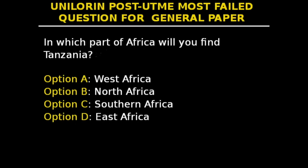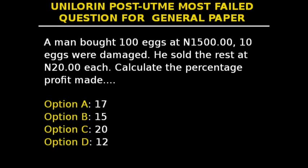This is question 21 in our series. It says: in which part of Africa will you find Tanzania? Tanzania is a sovereign state in Eastern Africa. It borders Kenya and Uganda to the north; Rwanda, Burundi, and the Democratic Republic of Congo to the west; Zambia, Malawi, and Mozambique to the south; and the Indian Ocean to the east. So the answer is D — East Africa.